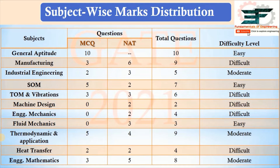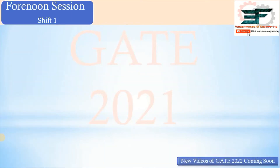For Machine Design and Engineering Mechanics, no MCQs were asked — only two NAT type questions respectively, and these were difficult. For Fluid Mechanics and applications, there were nine questions at a moderate difficulty level. For Heat Transfer, there were four questions — two MCQ and two NAT — at a difficult level. For Engineering Mathematics, there were three MCQ and five NAT type questions at a moderate difficulty level. Notably, in the morning session paper there were no questions from Linear Algebra.